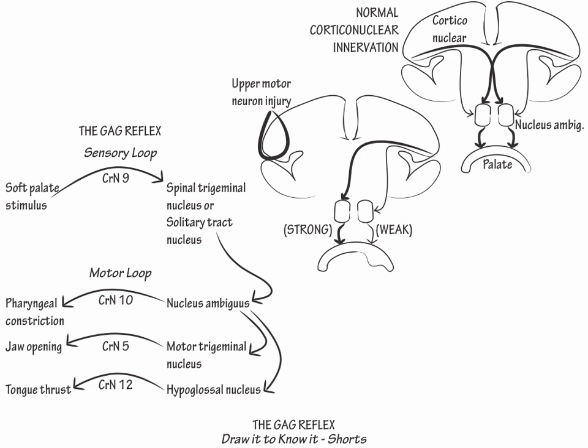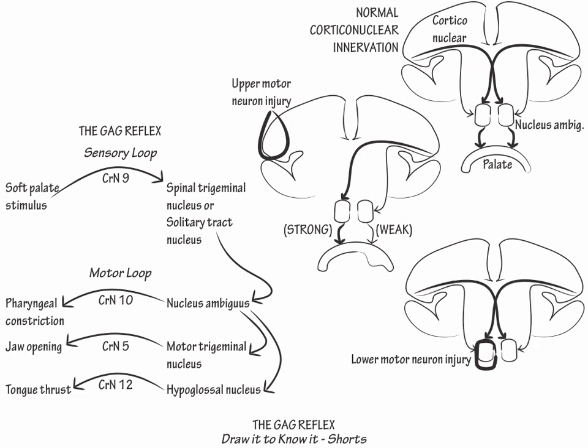Next again draw the hemispheres and the bilateral nucleus ambiguous nuclei. Show that in a lower motor neuron injury, such as a direct lesion to the nucleus ambiguous itself, corticonuclear innervation is preserved to both nucleus ambiguous nuclei, but there is complete peripheral fiber loss on the side of the lesion, manifesting with palatal paralysis on that side, and normal strength on the opposite side.